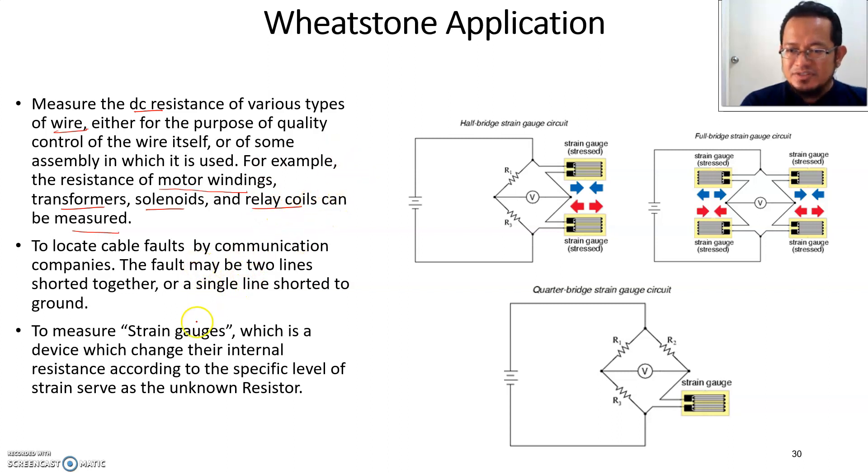Finally, one application for Wheatstone bridge is that it can be used to measure strain gauges. A strain gauge is basically a strip of wire that, whenever the strip of wire is stretched or stressed, it will create a different value of resistance across the wire inside the gauge.